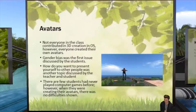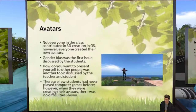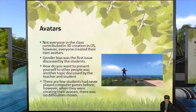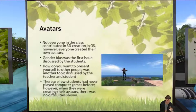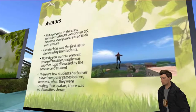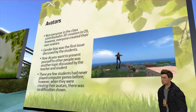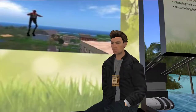Not everyone in the class contributed to 3D creation in OpenSim; however, everyone created their own avatar. Gender bias was the first issue discussed — students wanted to create gender-neutral avatars, but the default avatar shape and outfit options were gender-specific. A discussion arose about how you want to present yourself to other people. Some girls chose to wear very exposed outfits, saying they just looked good. When the teacher asked the boys what they thought about girls wearing such outfits in real gaming, the boys gave the girls a very good lesson in the meaning of visual representation.